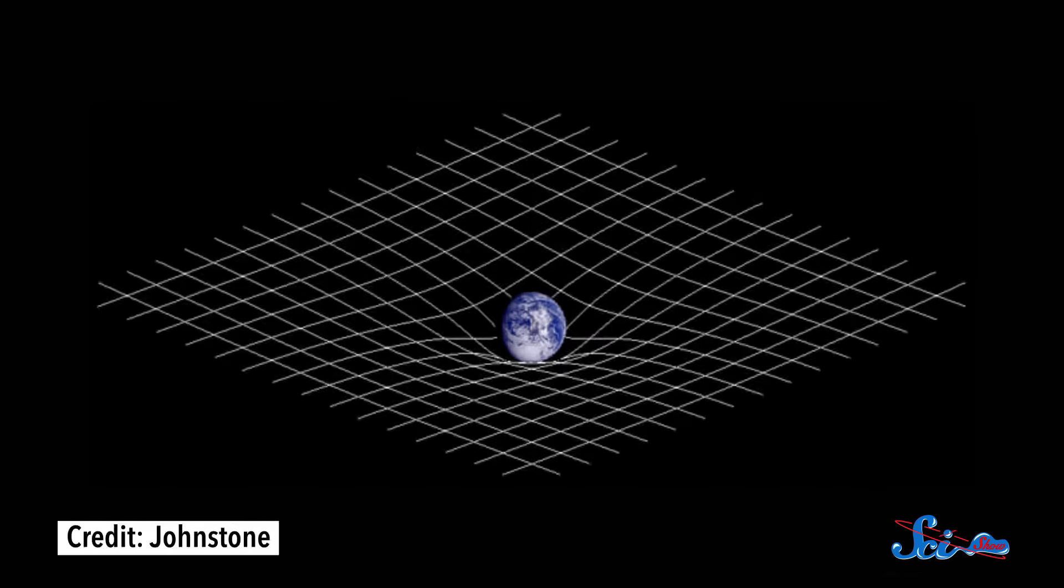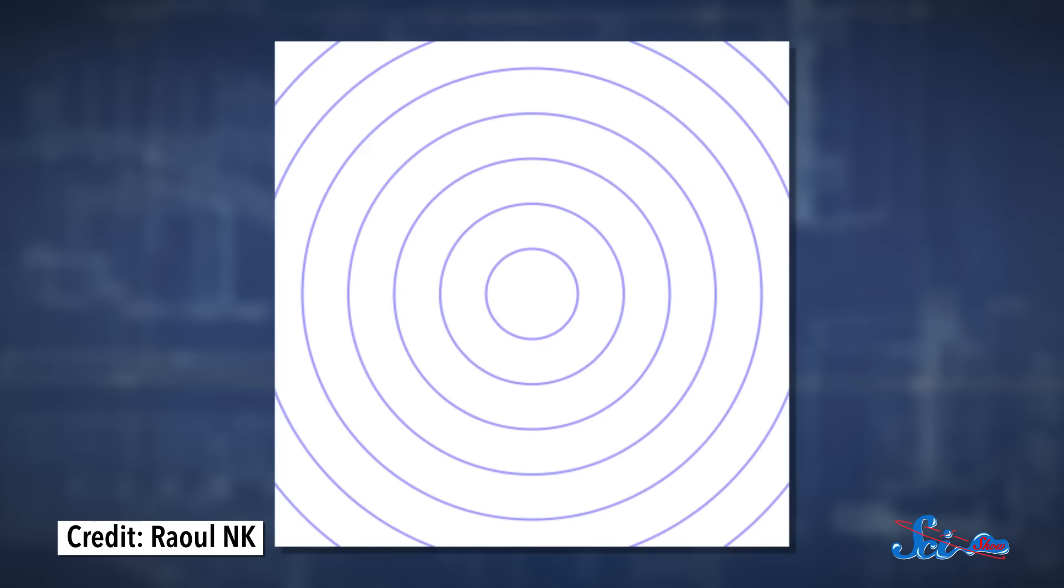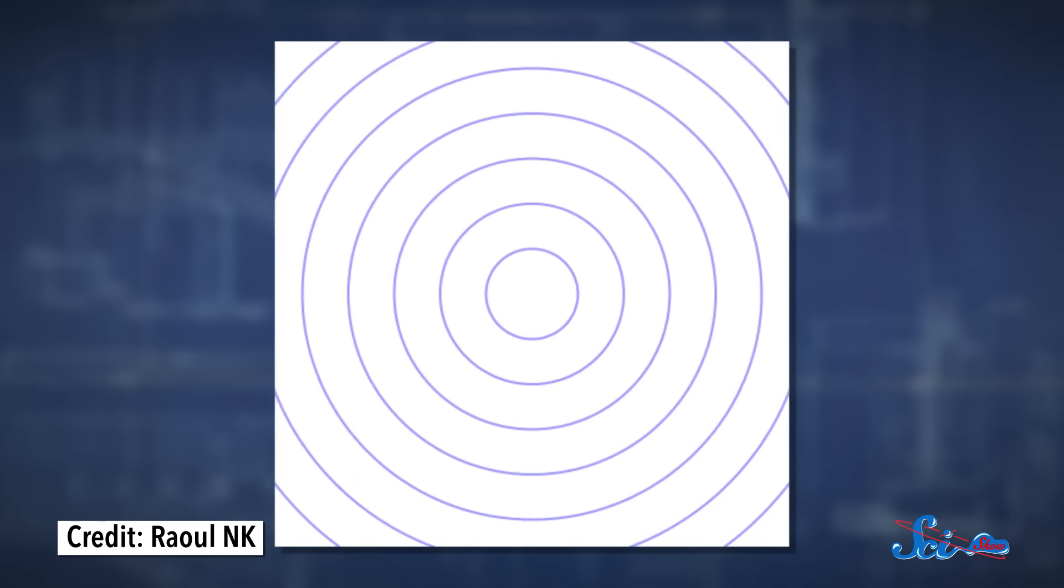He proposed that any kind of mass distorts the shape of the universe, as well as time, aka spacetime. And when a mass moves through the universe, it creates what are basically ripples in spacetime, which he called gravitational waves.